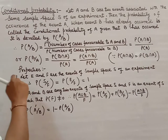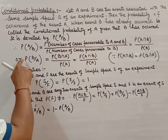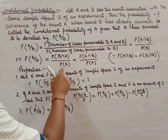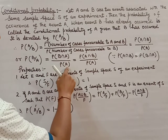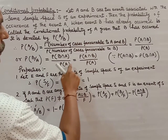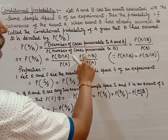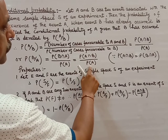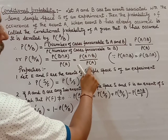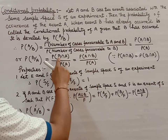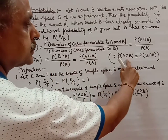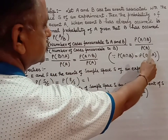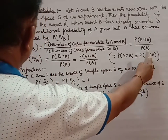Similarly, P(B|A) is equal to the probability of B intersection A divided by the probability of A, which equals P(A intersection B) divided by P(A), because P(A intersection B) is equal to P(B intersection A).